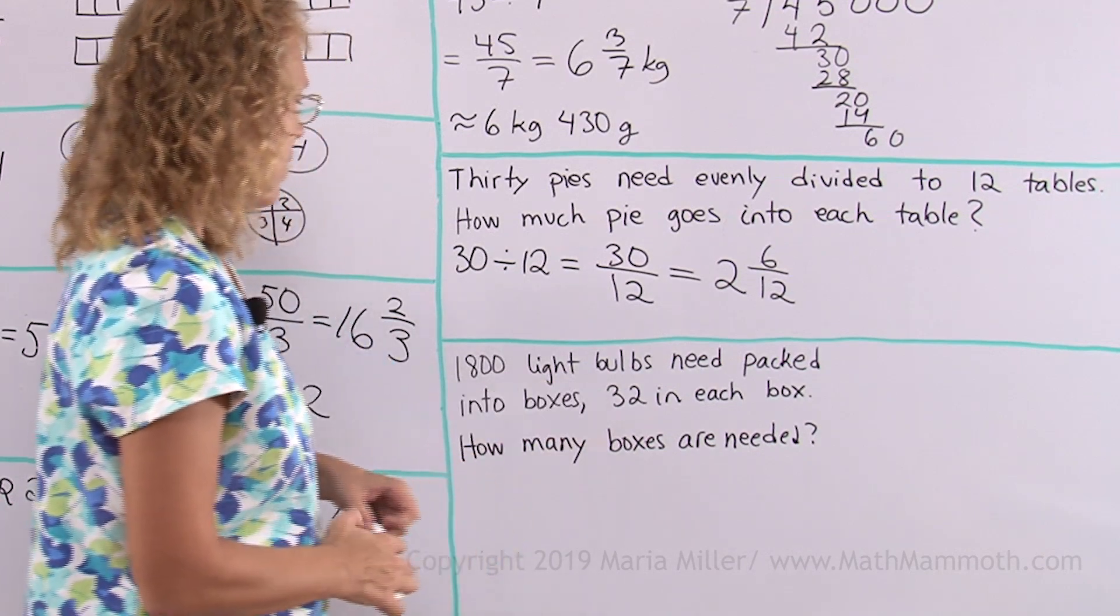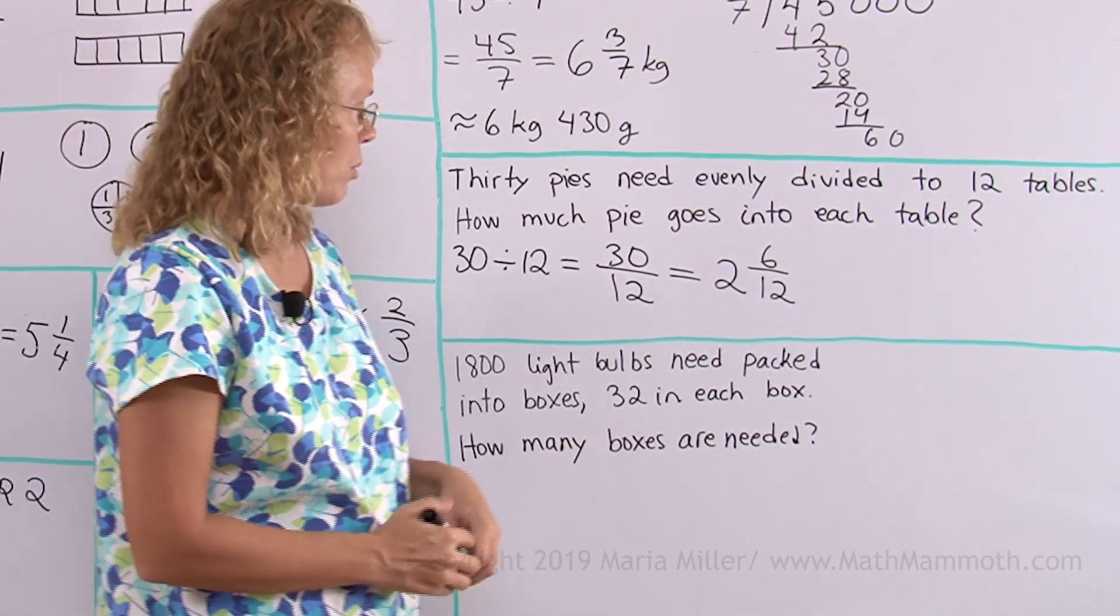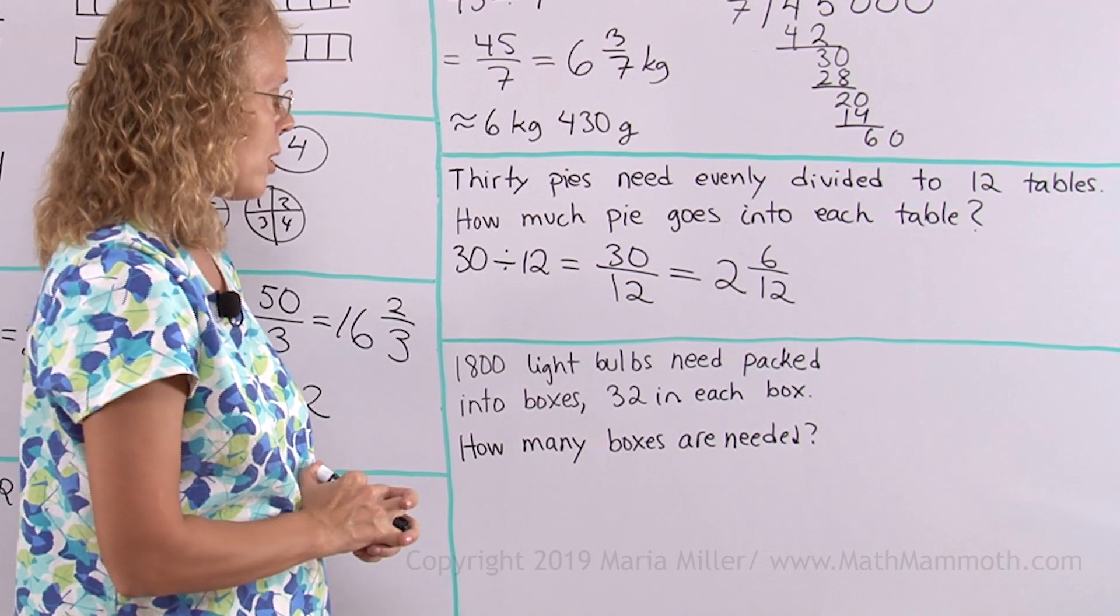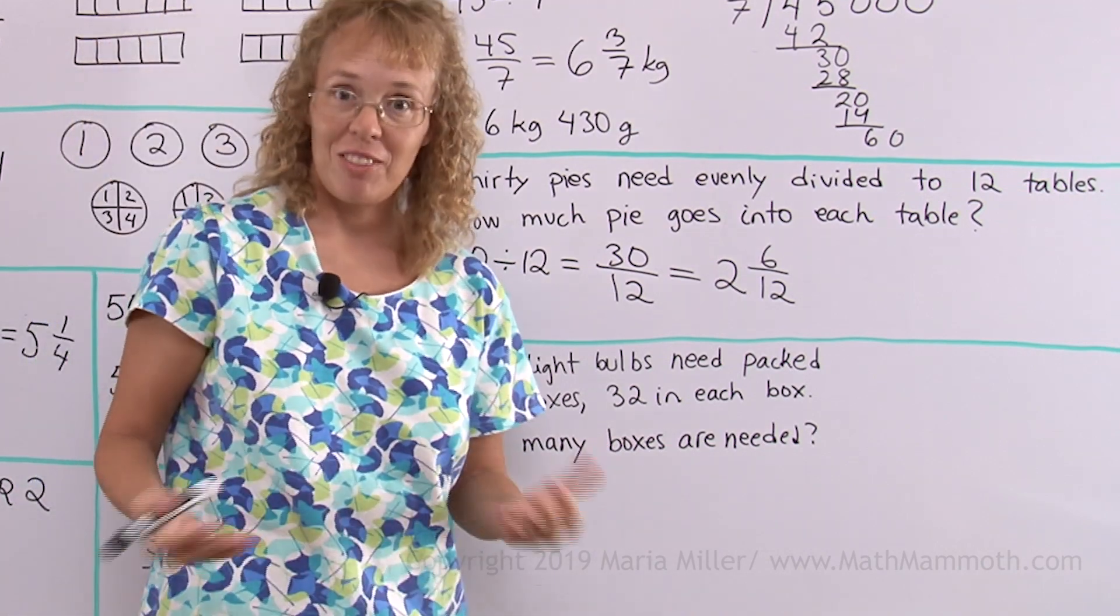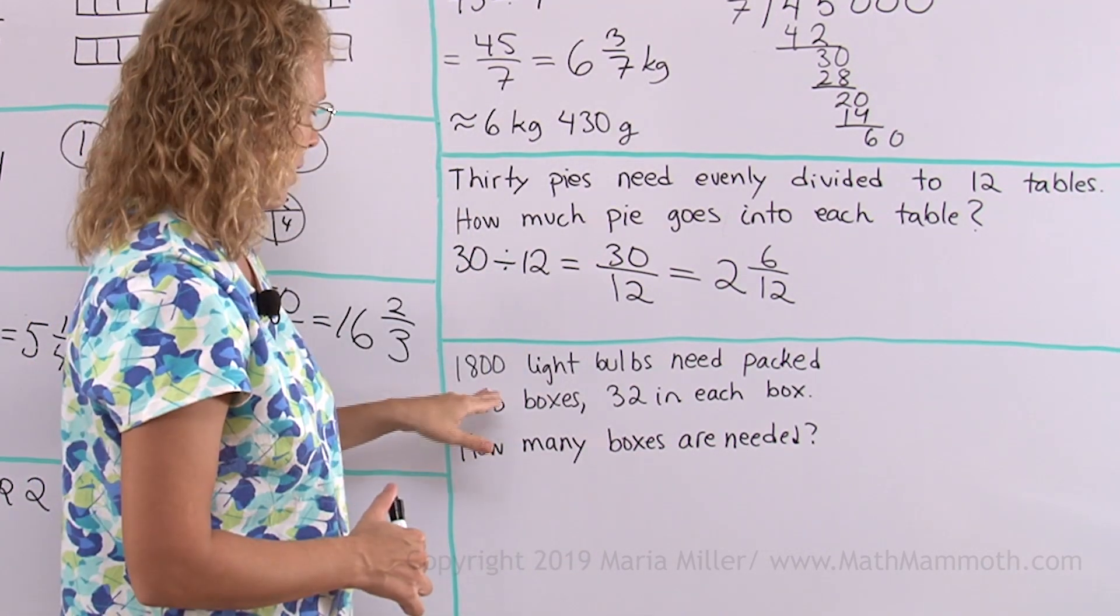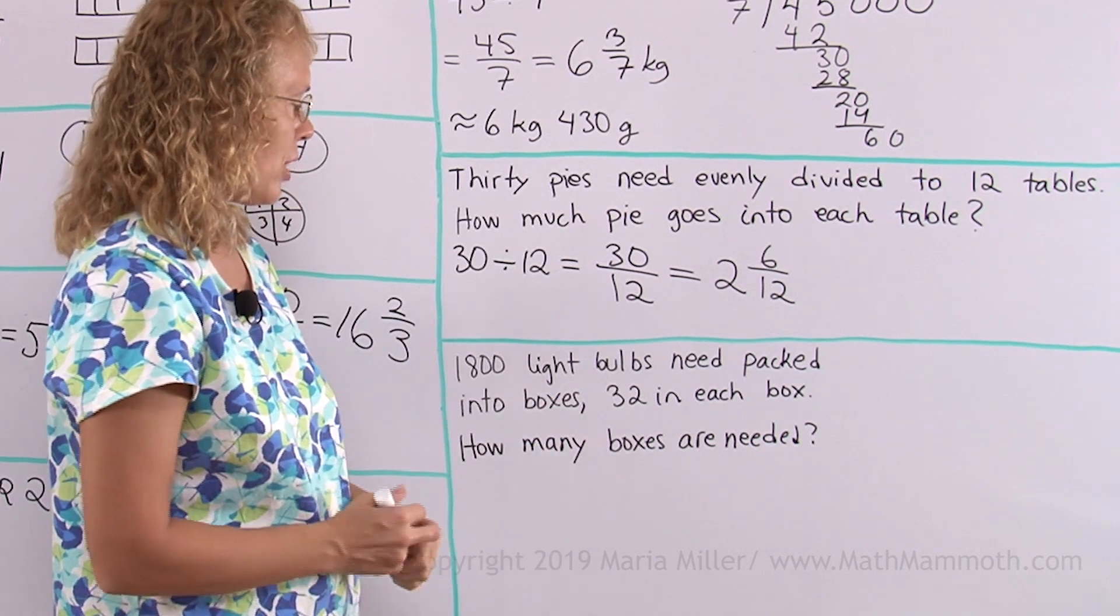1800 light bulbs need packed into boxes, 32 in each box. How many boxes are needed? Now, this is again a division problem, okay? 1800 divided by 32.